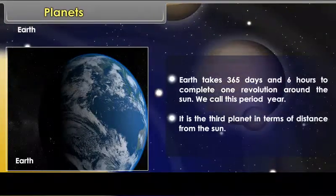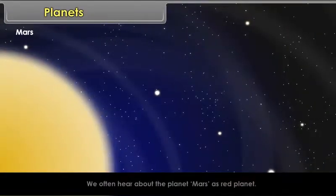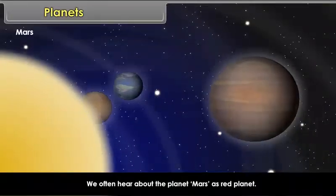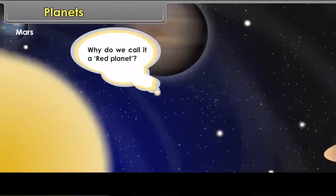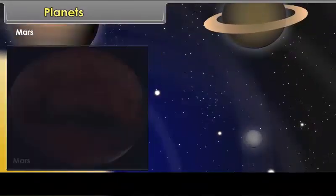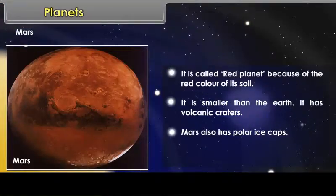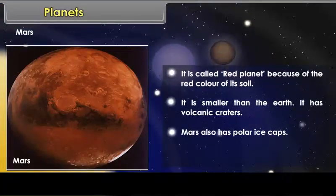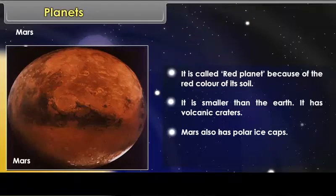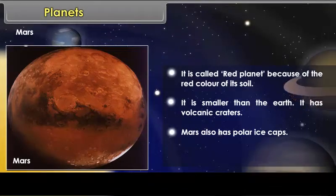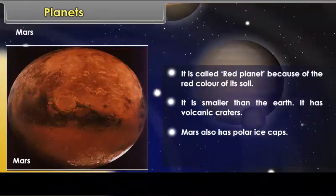Mars. We often hear about the planet Mars as red planet. Why do we call it a red planet? It is called red planet because of the red color of its soil. It is smaller than the Earth. It has volcanic craters. Mars also has polar ice caps.